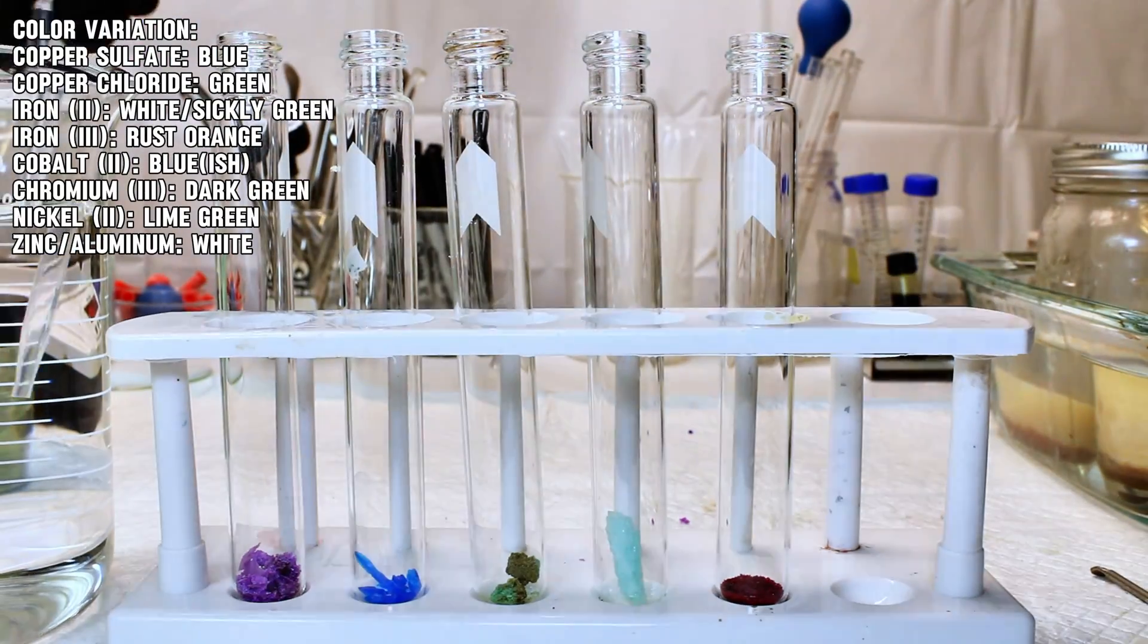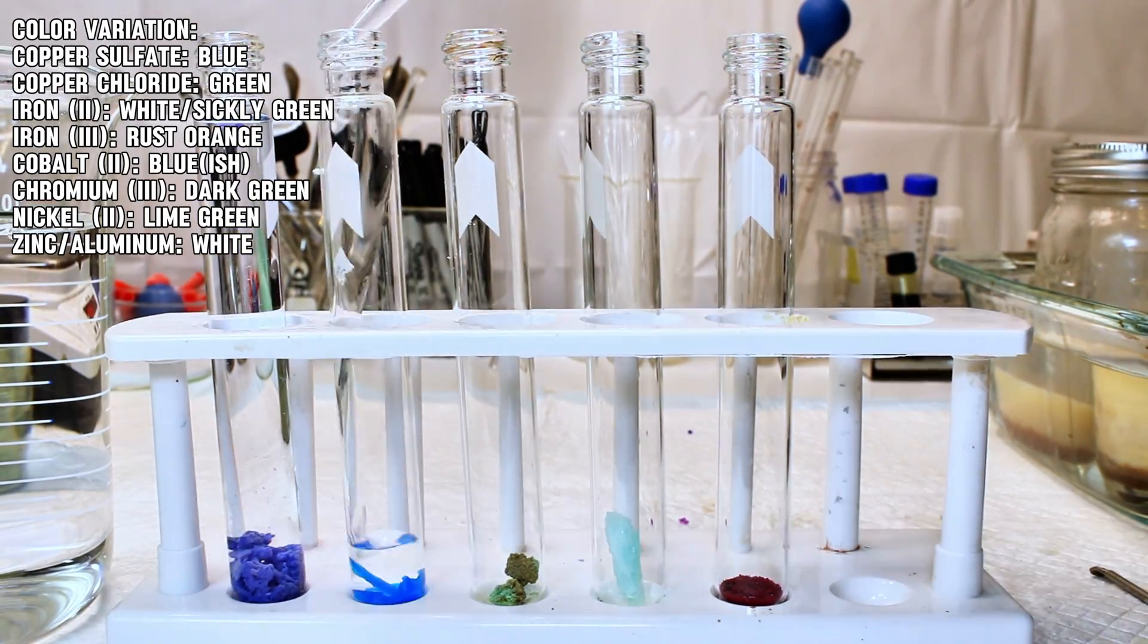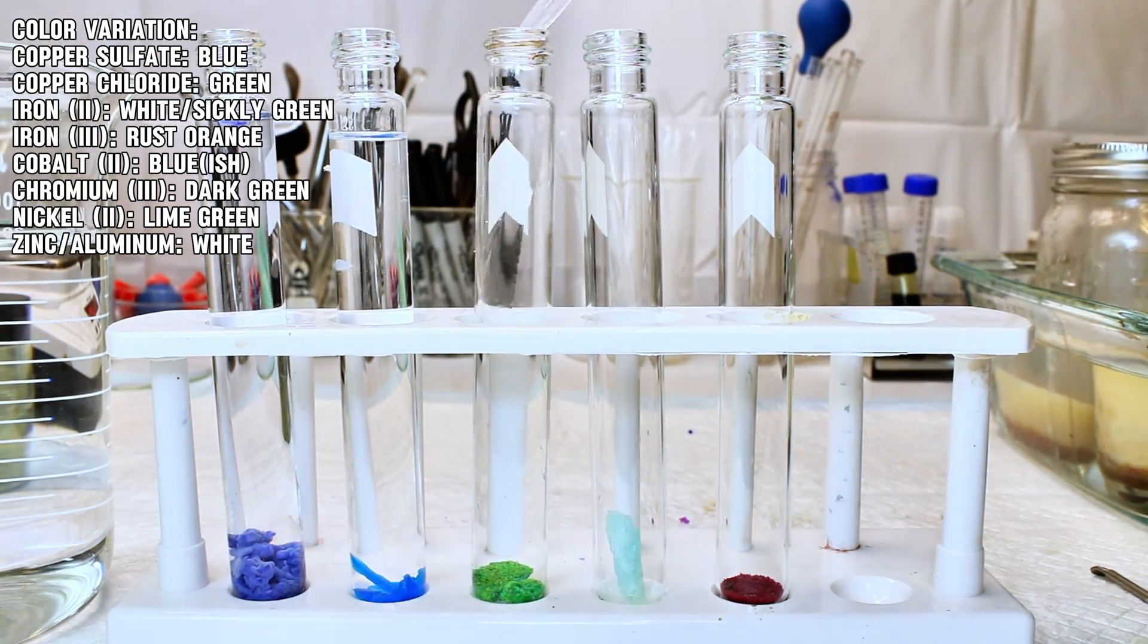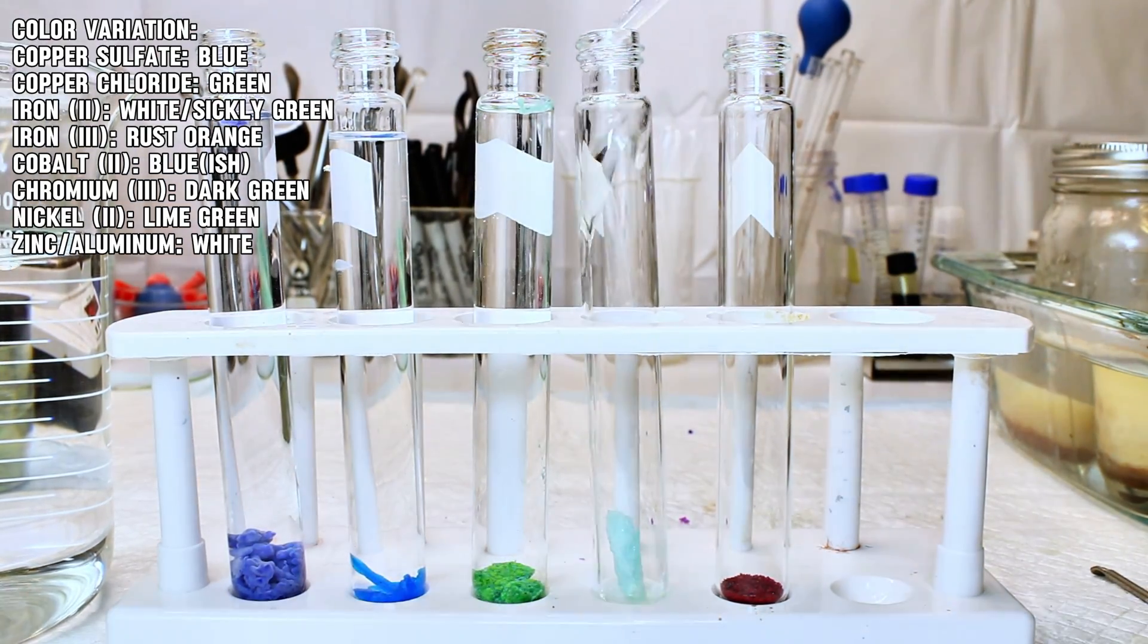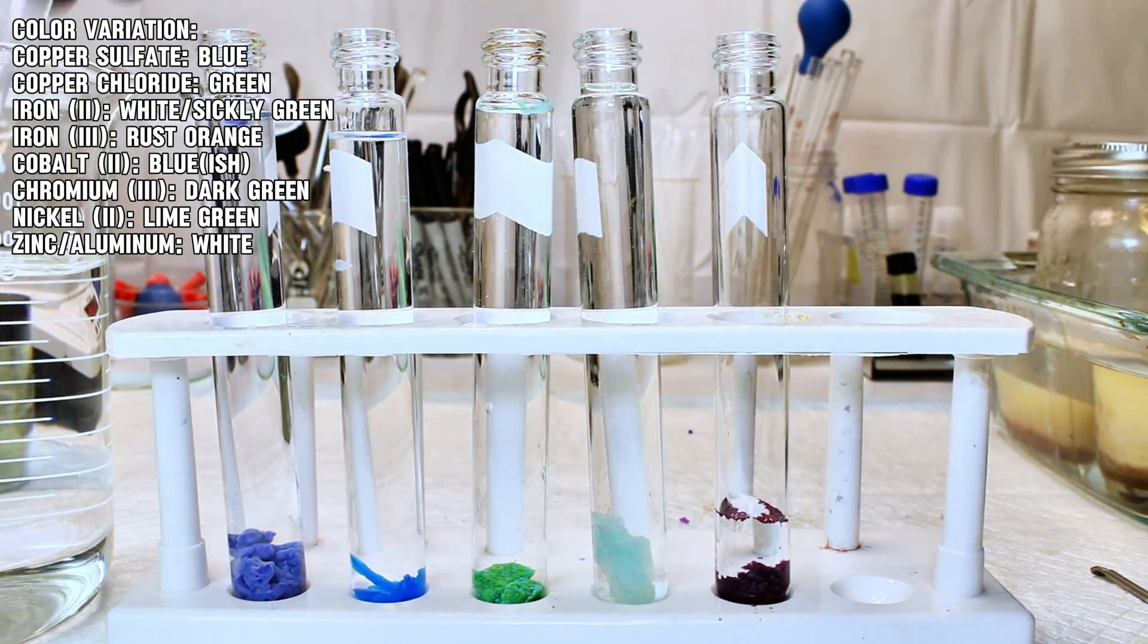Copper sulfate will form blue growths, copper chloride will form green. Iron sulfate is more of a sickly green, while iron chloride is a rust orange. Cobalt is usually dark blue, chromium is dark green, nickel is lime green, and zinc and aluminum are white.